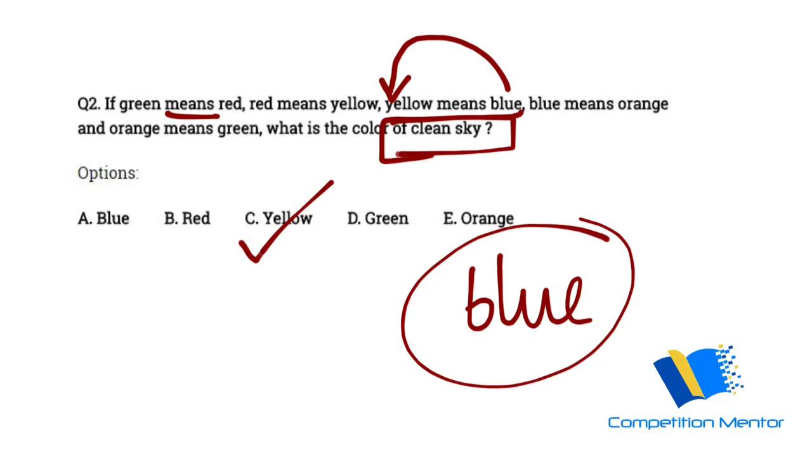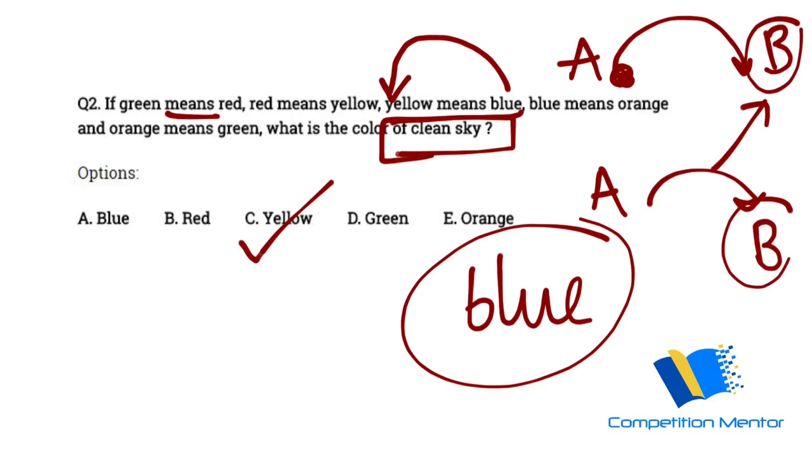So the only difference is when you are using called, you check this part. This will be your starting point. A is called B. So what is the color of A? The answer will be B. And if A means B, the question will be from B and the answer will be A.